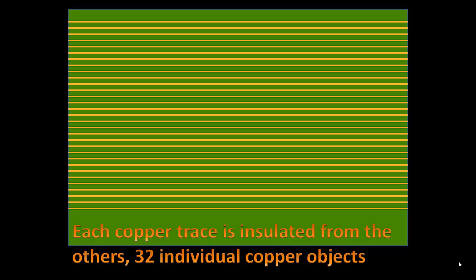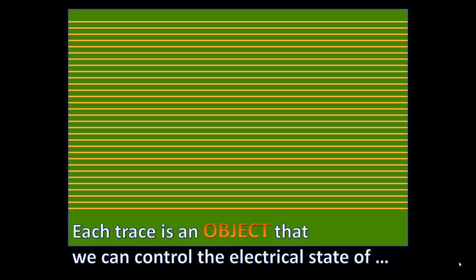The result is these 32 copper traces. Each of these copper traces is a piece of copper whose electrical state we can control — we can make it positive by removing electrons, negative by adding electrons, or it could be neutral as shown here. Each trace is an object whose electrical state we can control.